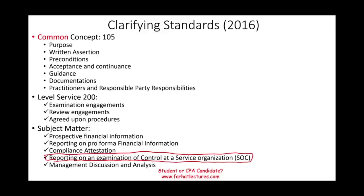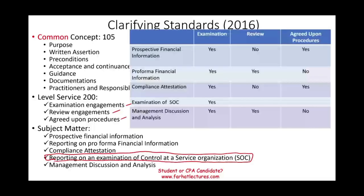So we don't lose track of what we are doing: this is within the attestation engagement where we can provide three levels of service — examination, review, and agreed upon procedures. In the prior session, we looked at prospective financial information, pro forma financial information, compliance attestation, and management discussion and analysis.